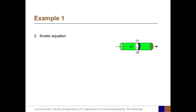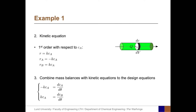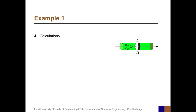The kinetic equation for the first-order reaction gives: r_A = −k·C_A and r_B = k·C_A. Combining mass balances with kinetic equations, the design equation for A is −k·C_A = dC_A/dθ, and the design equation for B is k·C_A = dC_B/dθ.